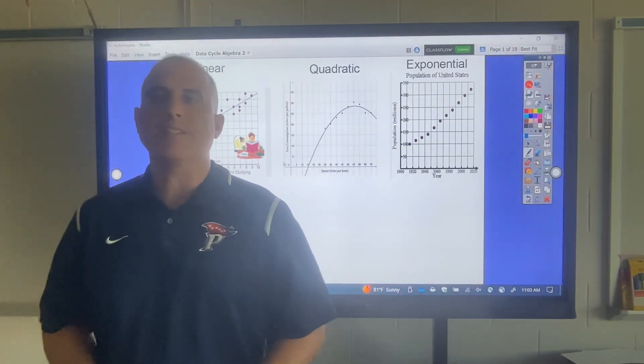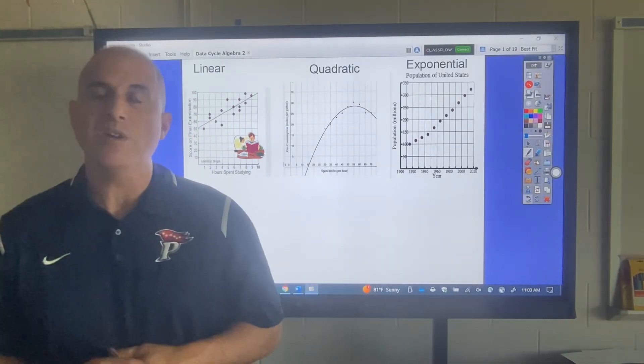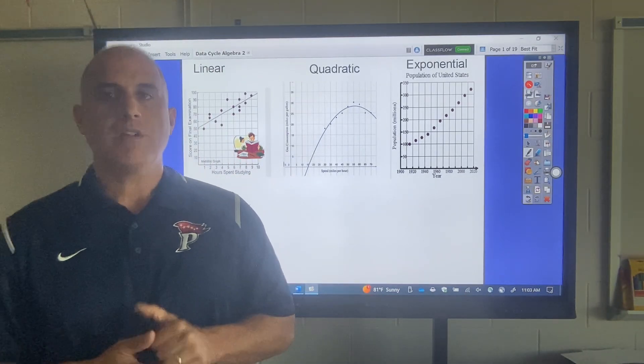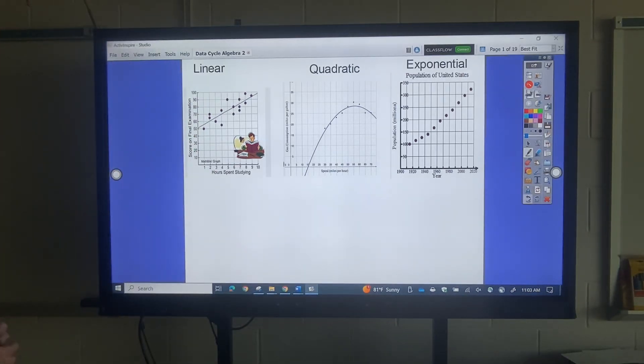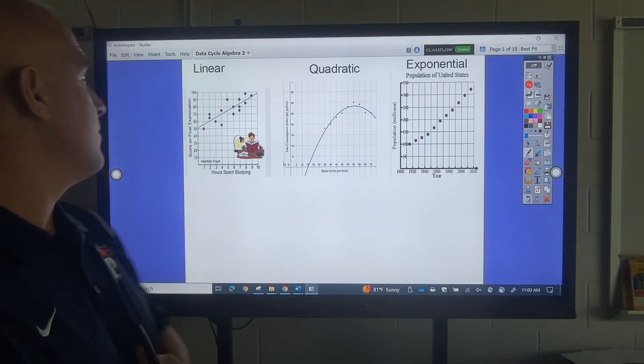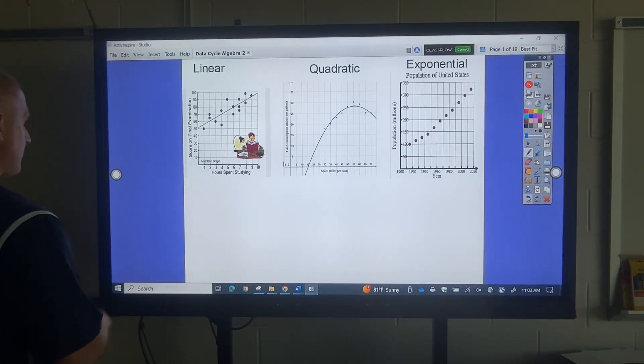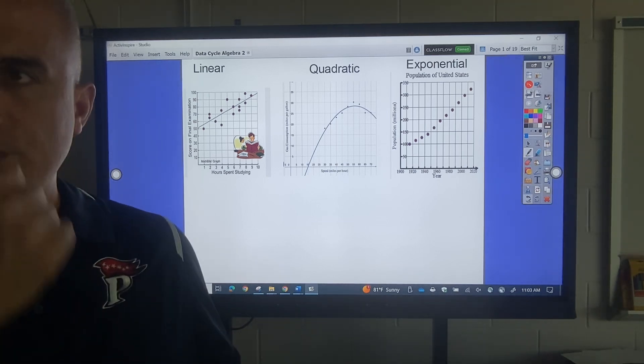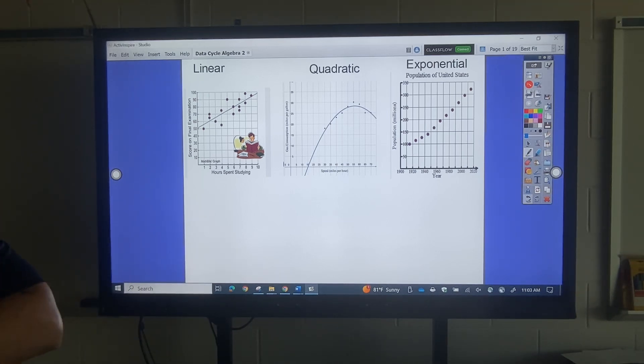This is going to be an opening lesson on the data cycle. We'll be talking about the data cycle all year in algebra, whether that's algebra 1 or algebra 2. I want you to look at these graphs up here. All these graphs represent real-life data, where math actually appears in real life. The first one says hours spent studying and score on the final exam. I want you to look at that and think about what that means when you have those dots like that and then that line. I want you to pause and maybe write down a few thoughts.